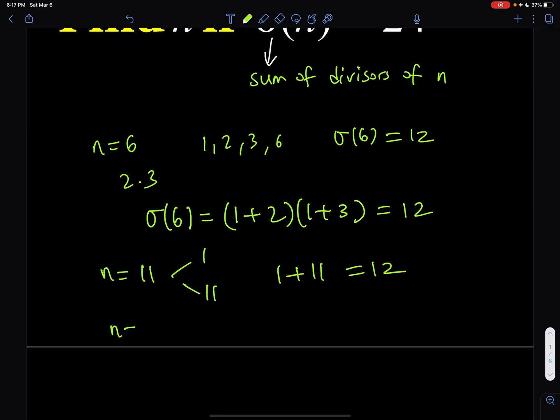We can basically say that if n is prime, then sigma of n is just going to be n plus 1 because n only has two divisors. Make sense? Okay, great. So let's go ahead and proceed.